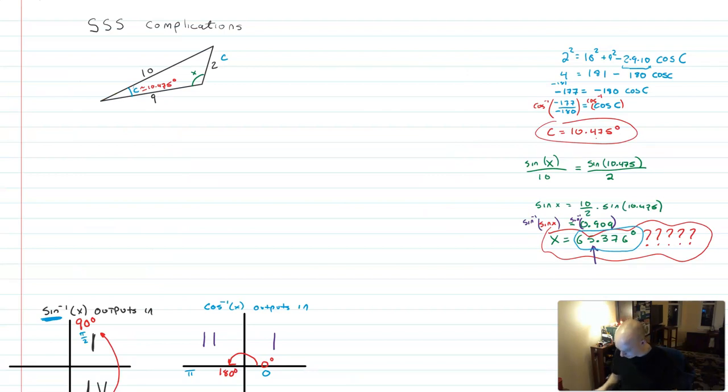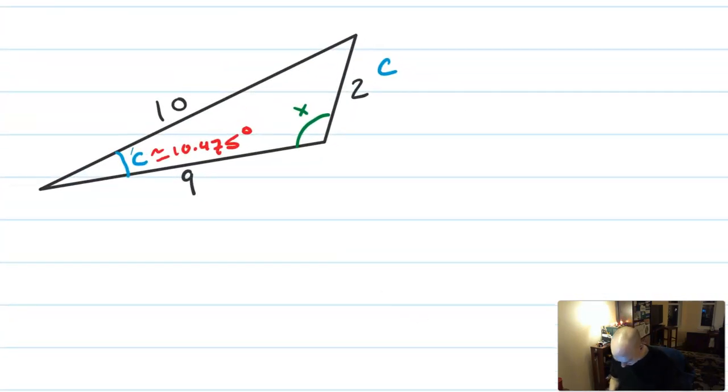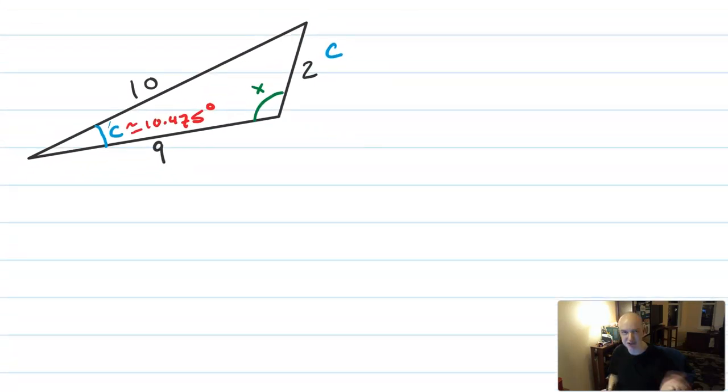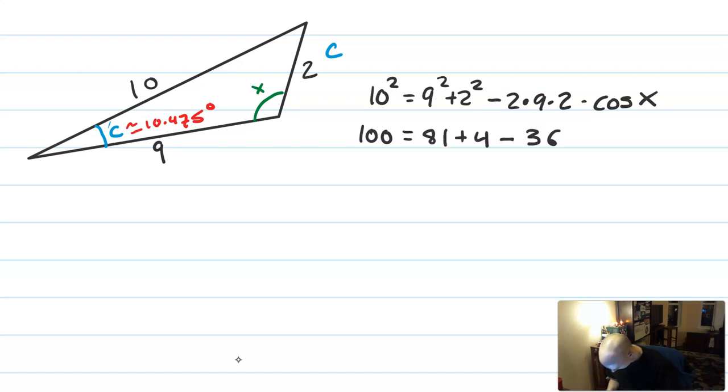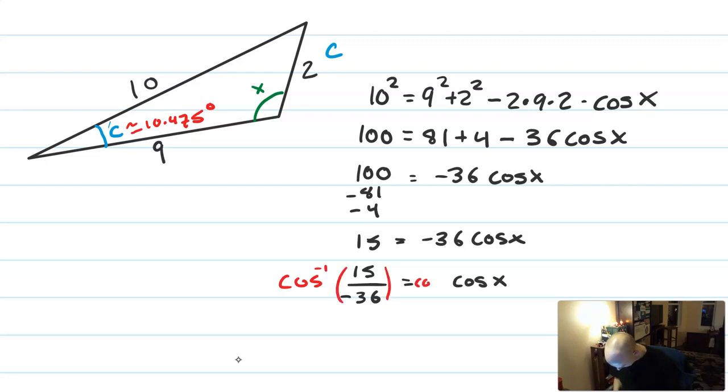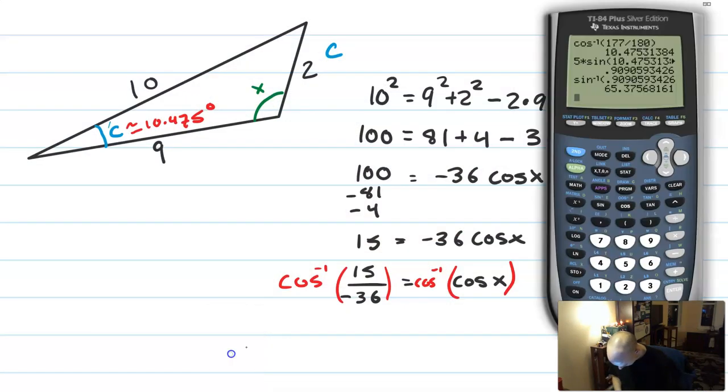So I'm going to try the same problem again, same triangle. I've just moved the other work to the other side there. And what I'm going to do is find X using, find X directly using law of cosines, and that should give us the true value of X. So here's the work for that.